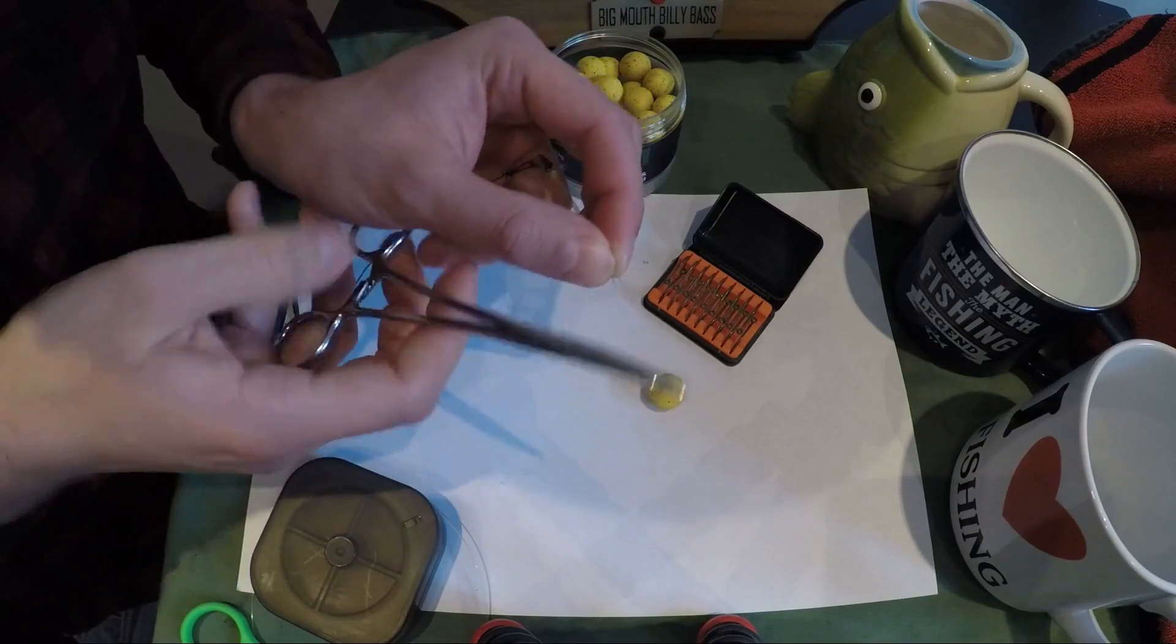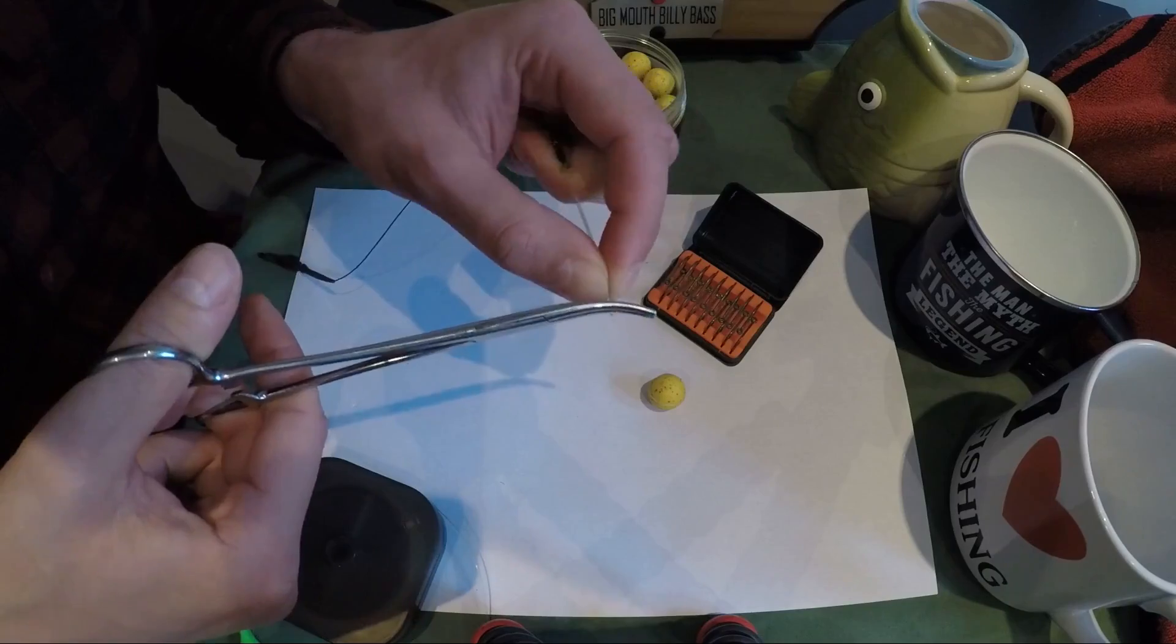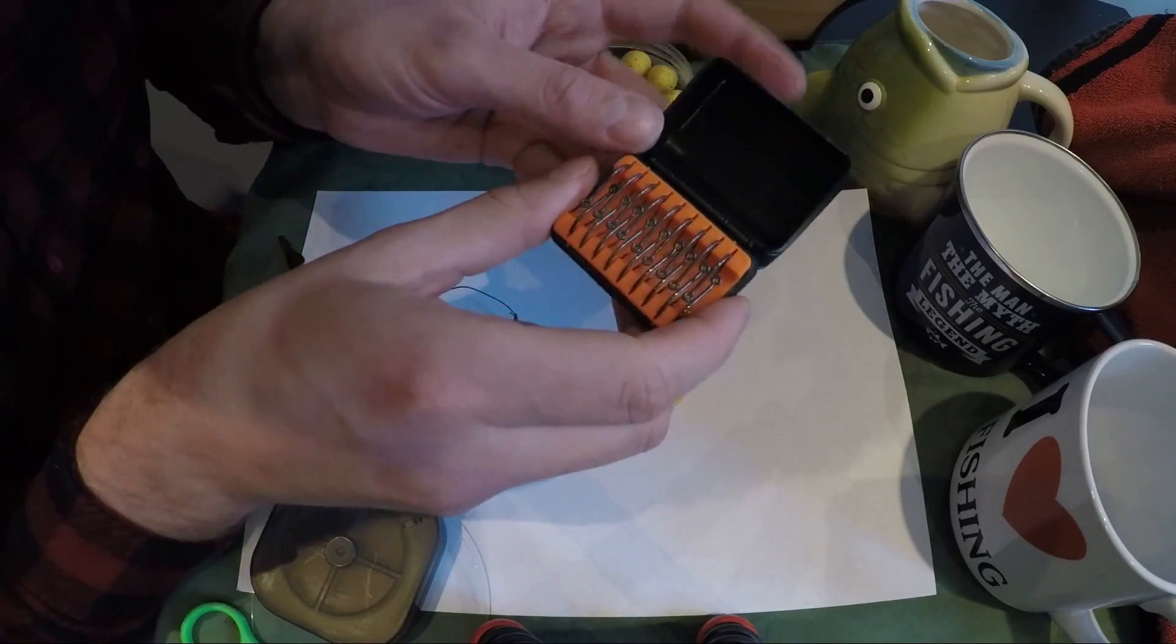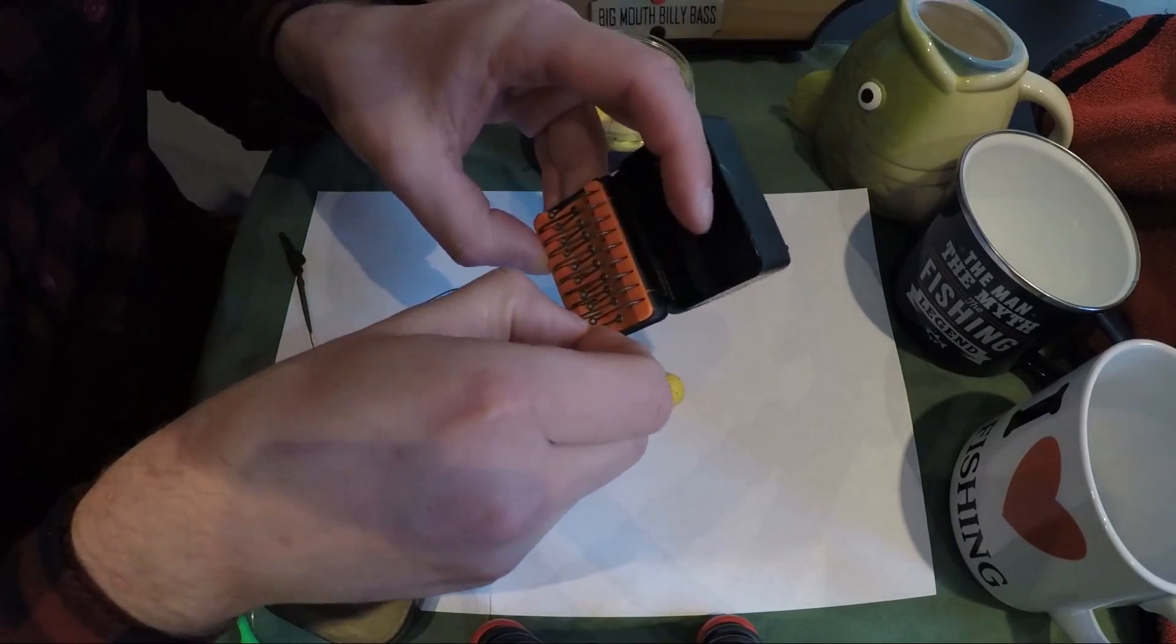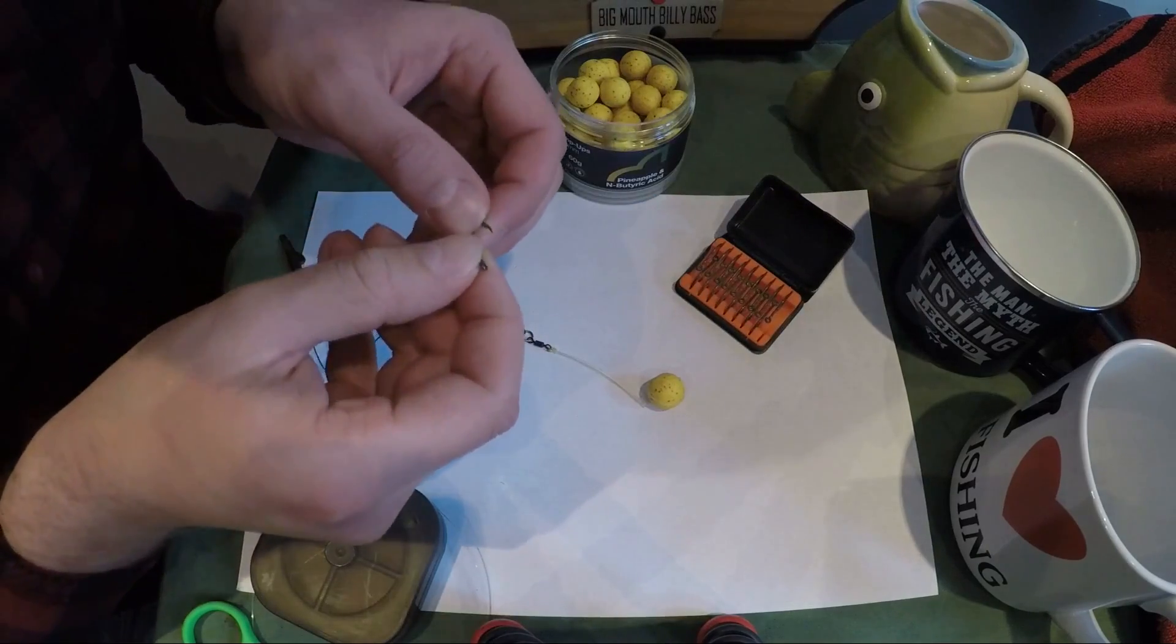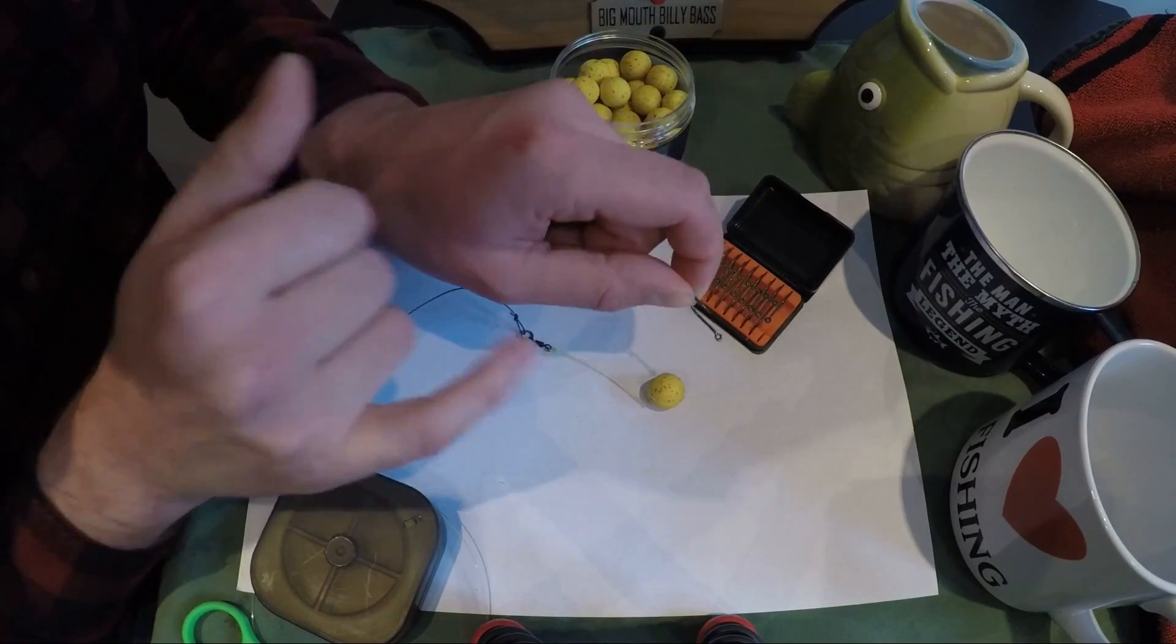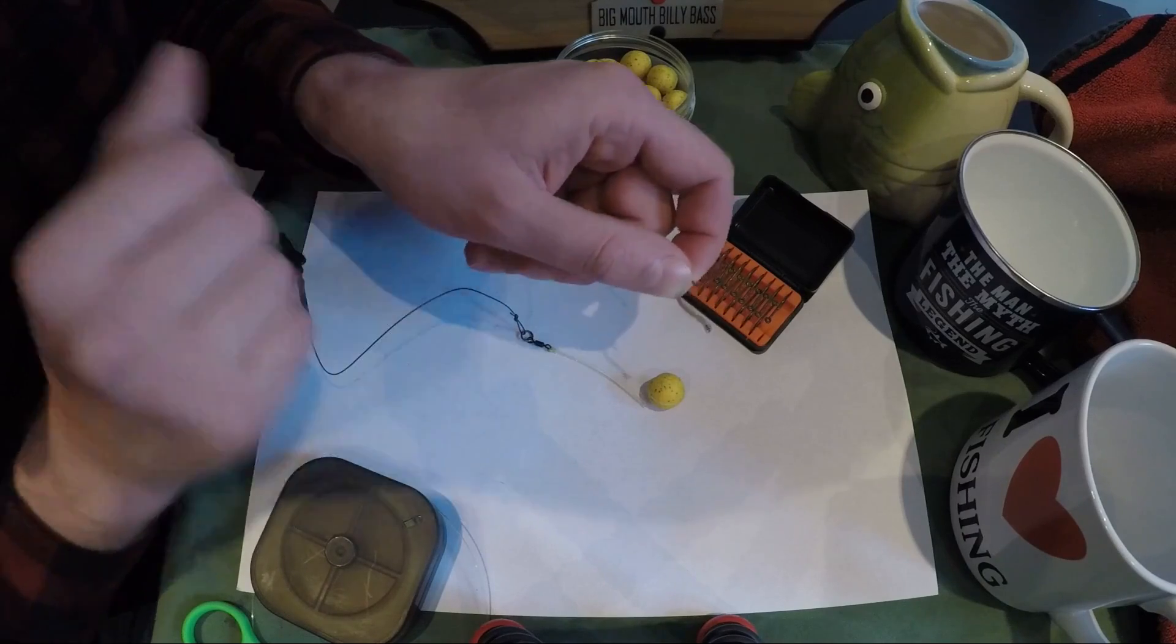Take your hook. Now I'm very fussy about how sharp my hooks are, so I keep them in a little hook box here so they can't blunt in your tackle box. What you want is about a size 6 stiff rig chod type hook. There's loads on the market, just use whatever you're confident in.